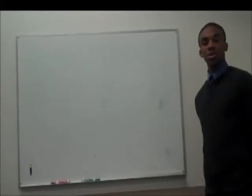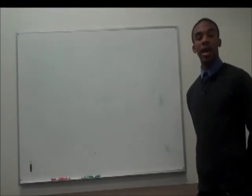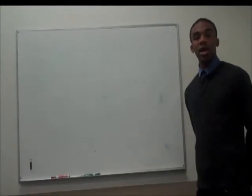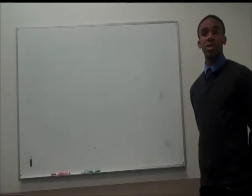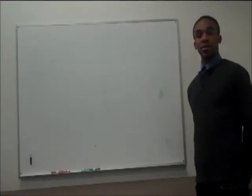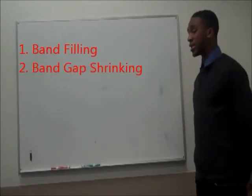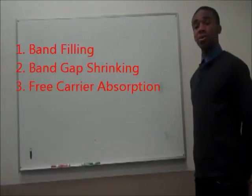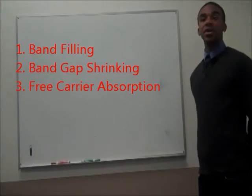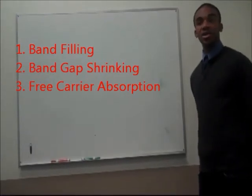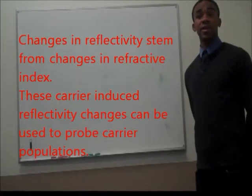When many electrons and holes are excited in the semiconductor via electrical and optical pathways, the electronic properties of the material change. The three main dominant effects are band filling, band gap shrinkage, and free carrier absorption. When the density of excited carriers is sufficiently high, the change in refractive index will be large enough to produce a measurable change in reflectivity.